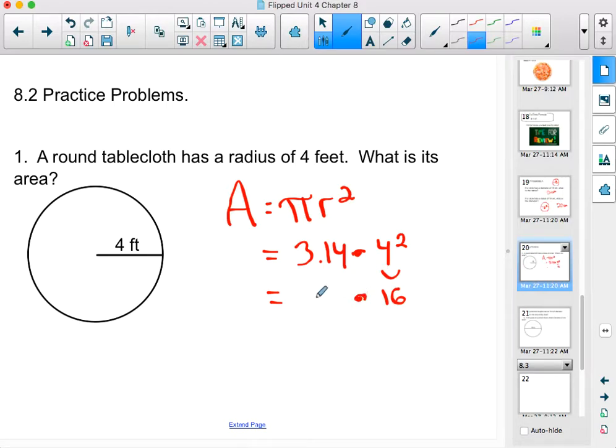And then we have to take 3.14 times 16. I'm going to use a calculator for this, 3.14 times 16 is 50.24. If you have a calculator, you can use that for these problems. If not, make sure that you are doing the long multiplication here.